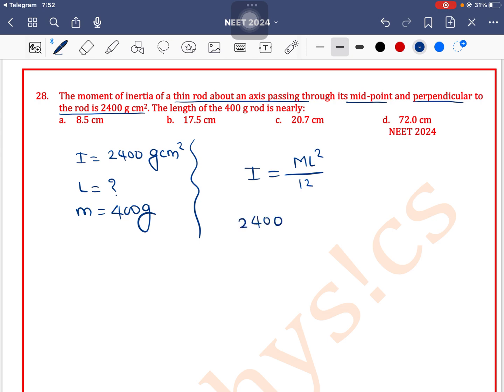So I is 2400, m is 400, L² by 12. 2020 cancel out, 4 into 6, 24, 12 square is equal to 12 into 6 is 72, so L² equals 72. L is equal to under root of 72. We can write 36 into 2, root 36 is 6, so 6 root 2.